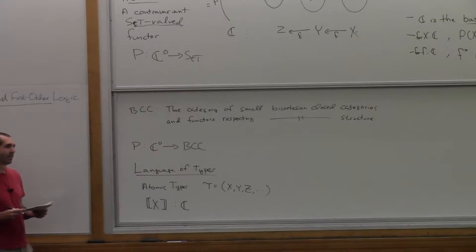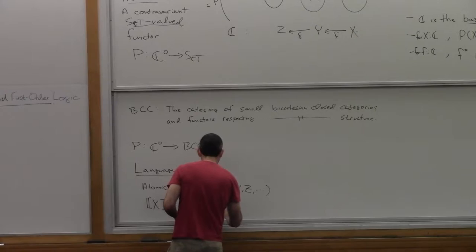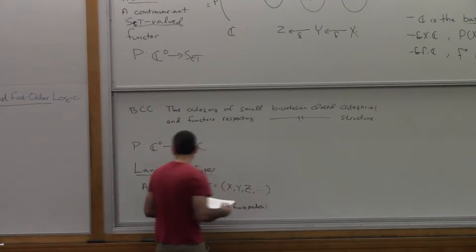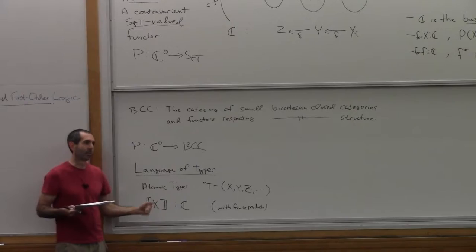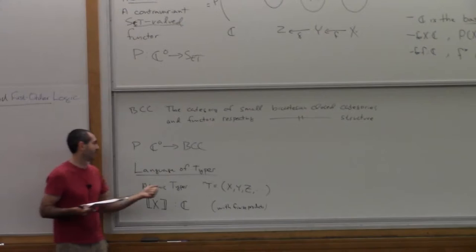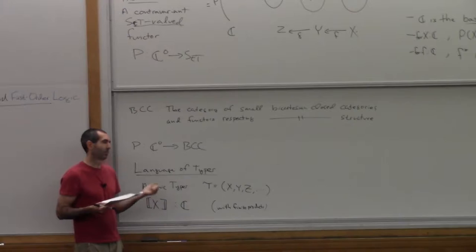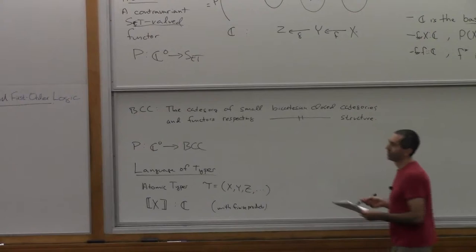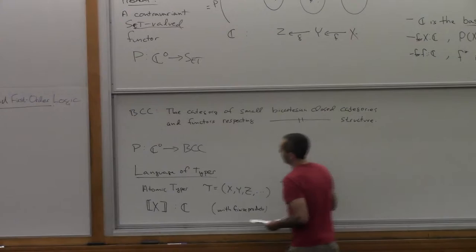The first thing we need, if we want to do first-order logic — up until now we've done only propositional logic, where our atomic propositions were just uninterpreted propositional variables — in predicate logic we have relation symbols on terms that give us our atomic predicates. So the first thing we need is a language of types and typing contexts.